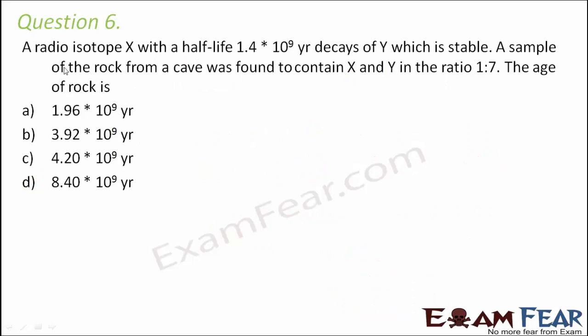Question number 6. A radioisotope X with a half-life of 1.4 × 10⁹ years decays to Y, which is stable. A sample of rock from a cave was found to contain X and Y in the ratio 1 to 7. The age of the rock is?